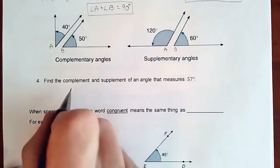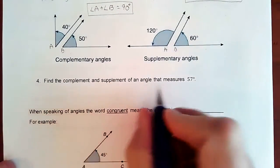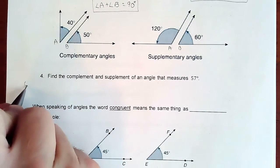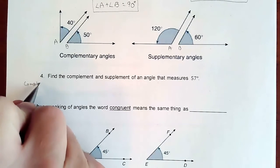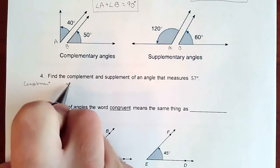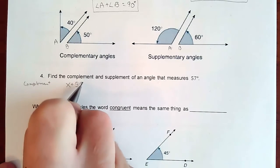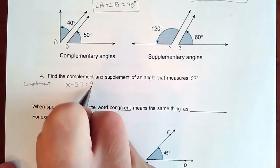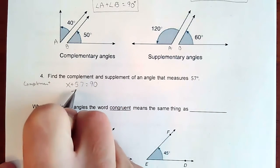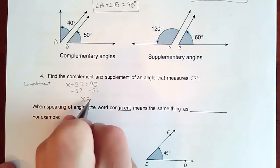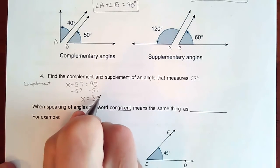So for example, they say they want you to find the complement and the supplement of that angle. Then if we're doing complement, we're doing some angle plus 57 is a complement. So that means it's going to make 90. So if we subtract 57, your angle would be 33 degrees. So that would be its complement.